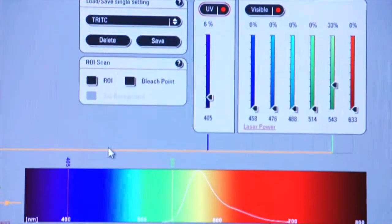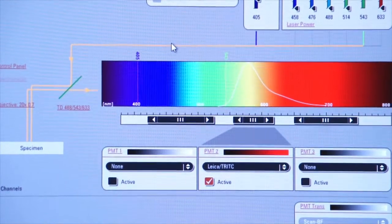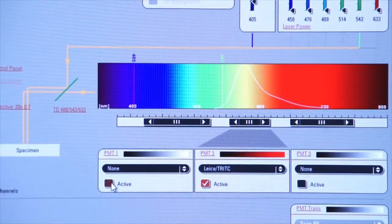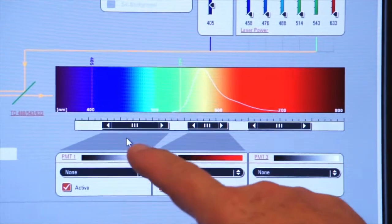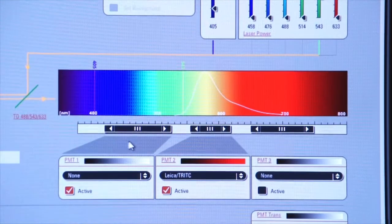You see the 405 line being generated, and now I can activate this PMT. Now you see the gray area indicating that the PMT is going to select information from that region of the spectrum.